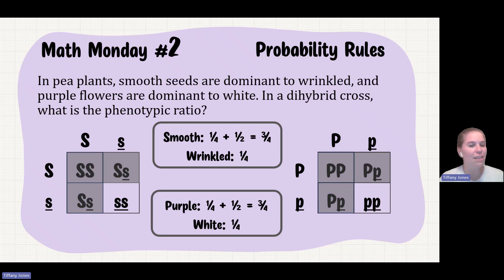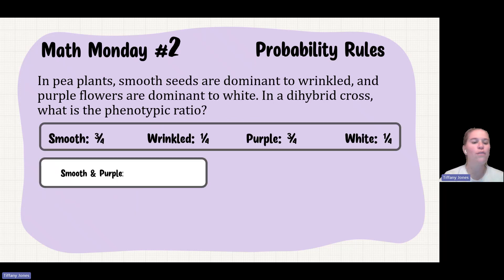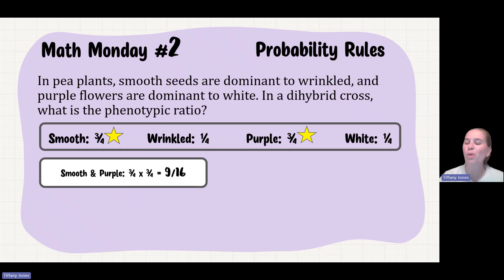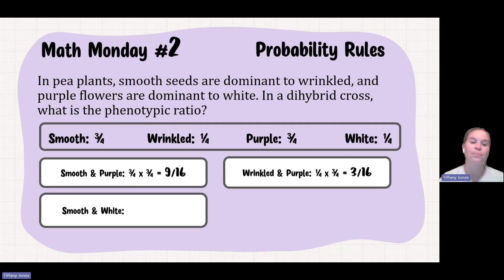I'm not done, because I need the phenotypic ratio — I need to put both smooth and purple together. We'll use the multiplication rule. For smooth and purple, these are independent events: probability of smooth is three-fourths and probability of purple is three-fourths. Multiply those together and I get nine-sixteenths. For wrinkled and purple: wrinkled is one-fourth, purple is three-fourths — multiply to get three-sixteenths.